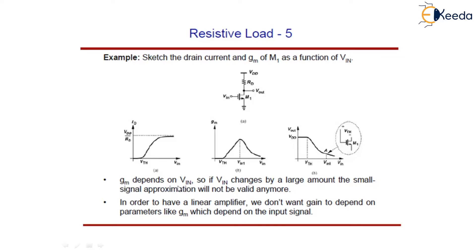This gm depends on VIN, so if VIN changes by a large amount, the small-signal approximation will not be valid anymore. The dependence of the gain upon the signal level leads to non-linearity, which is the most undesirable effect. To minimize non-linearity, the gain equation must not be a function of signal-dependent parameters such as gm. We don't want gain or gm to depend upon the input signal.